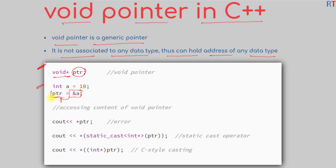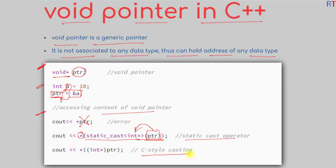The void pointer can hold the address of any data type variable and will point to that variable. To access the content of the void pointer, we cannot use the dereferencing operator directly. We have to use the static_cast operator to convert the void pointer to a specific data type pointer first, or we can use C-style casting, and then we can use the dereferencing operator.